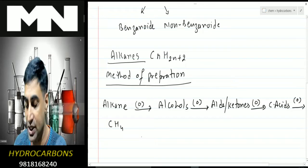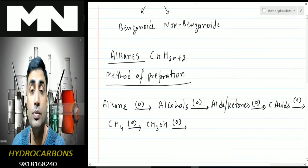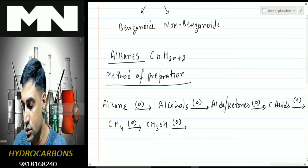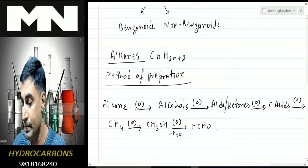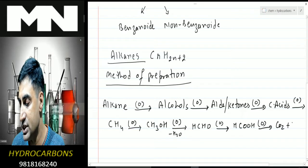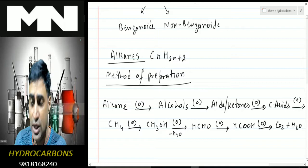For example, methane on adding oxygen gives methanol. On further oxidation — addition of oxygen, removal of hydrogen — H₂O comes out and we get HCHO, that is formaldehyde. Formaldehyde on further oxidation gives formic acid, which on further oxidation gives CO₂ plus H₂O. This is how oxidation generally occurs.